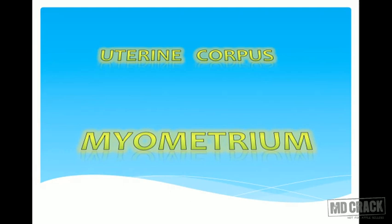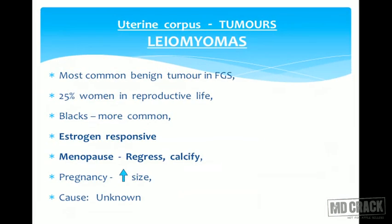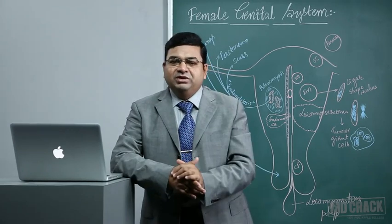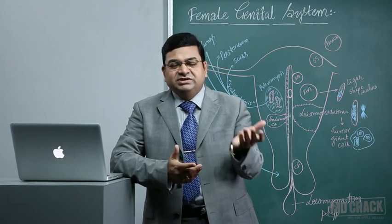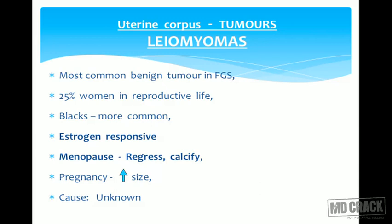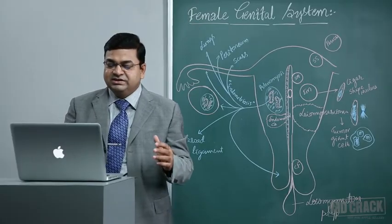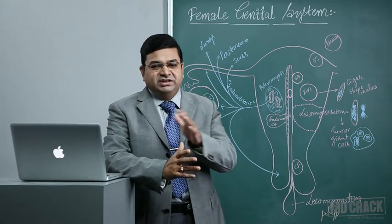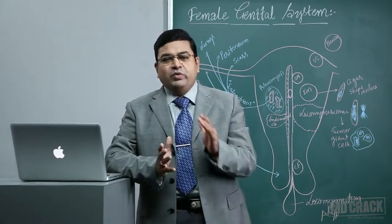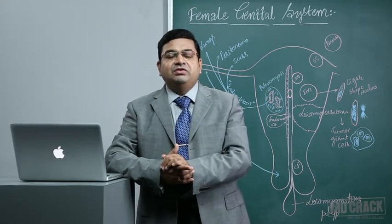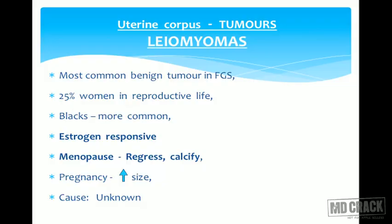Leiomyomas are the most common benign tumors of the female genital system. Around 25 percent of women in their reproductive age develop leiomyomas, commonly called fibroids. They are more common in Black populations and are estrogen-responsive. With menopause they can regress, or undergo calcification. In pregnancy, they increase in size and undergo a peculiar change called red degeneration of the fibroids.